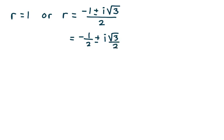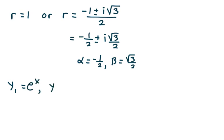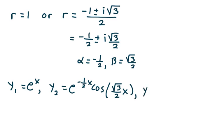Just like in example 1, we need three linearly independent solutions. Notice that alpha equals negative one-half and beta equals square root of 3 over 2. So my three linearly independent solutions are: y1 equals e to the x; y2 equals e to the negative one-half x times cosine of square root of 3 over 2 times x; and y3 equals e to the negative one-half x times sine of square root of 3 over 2 times x.